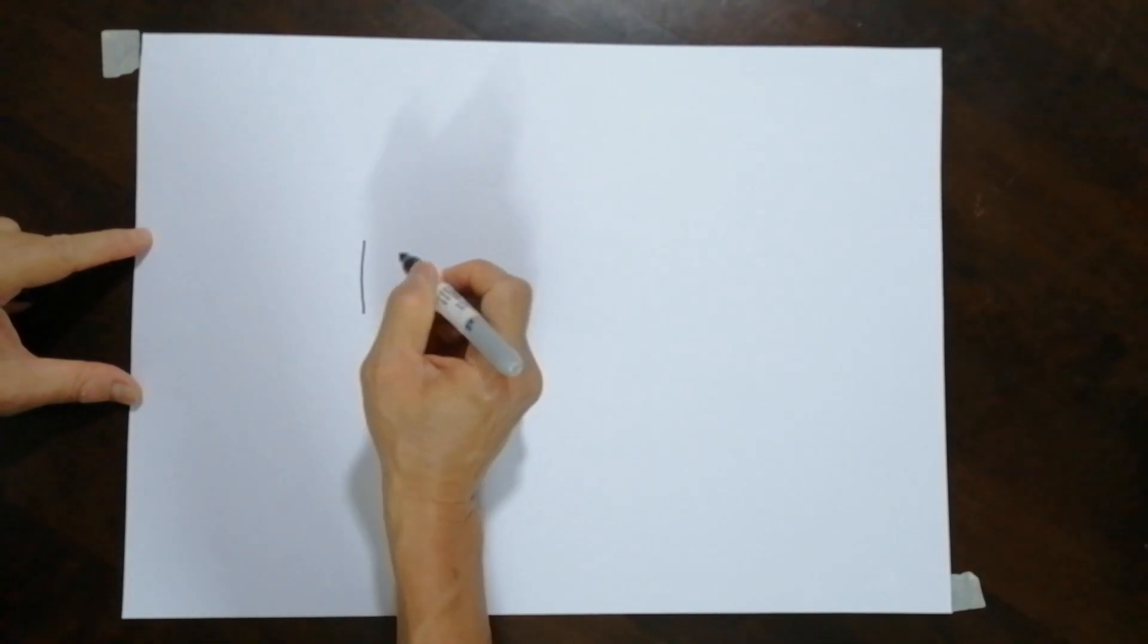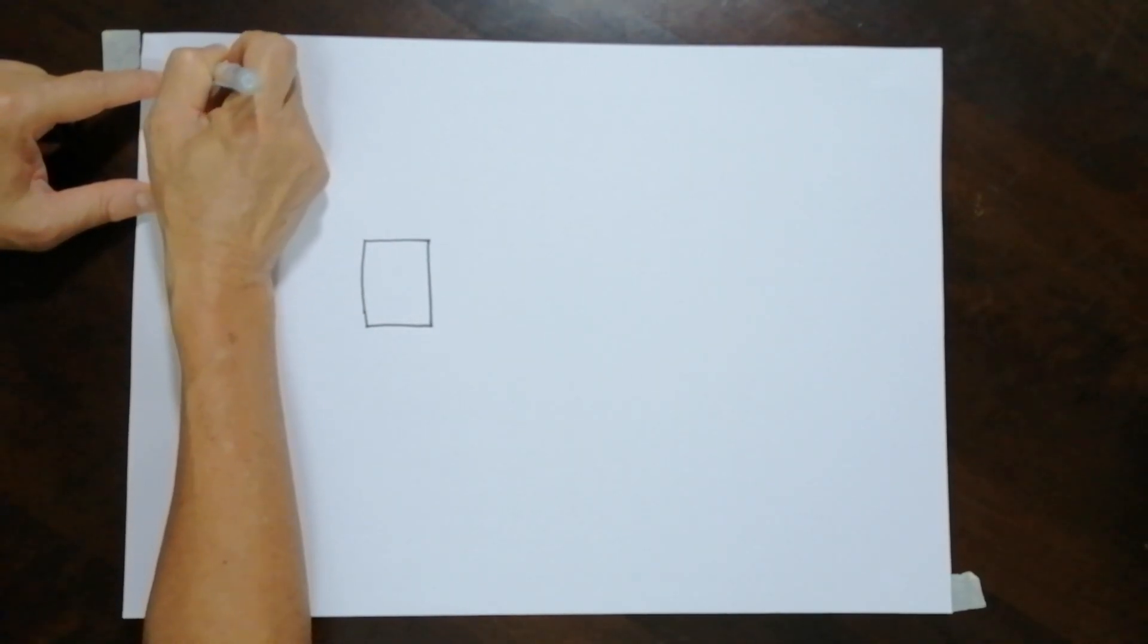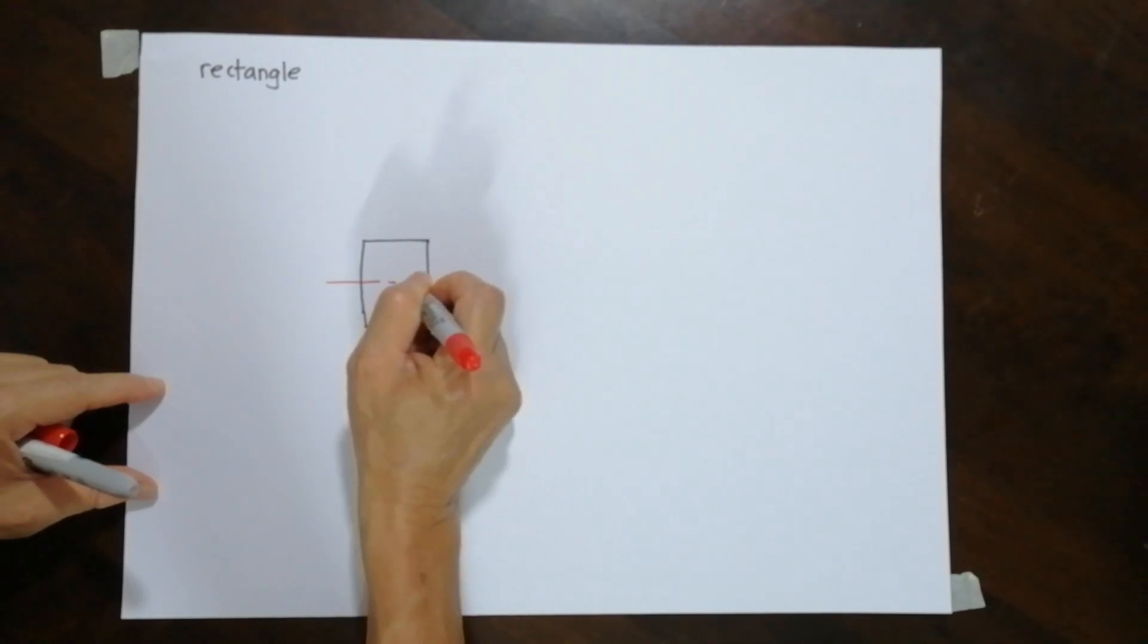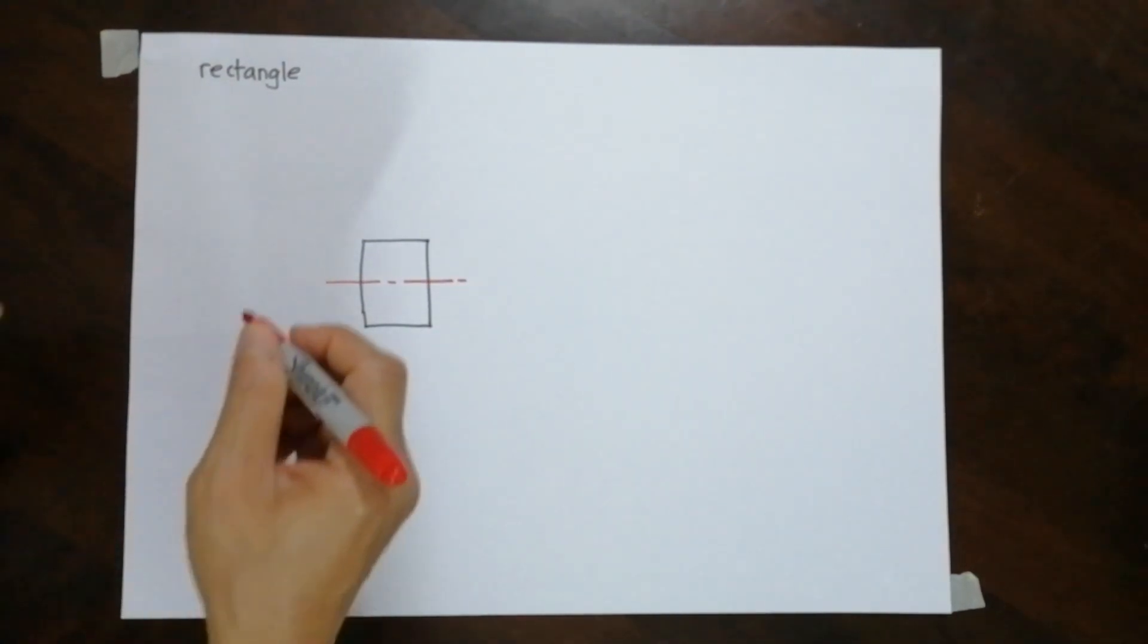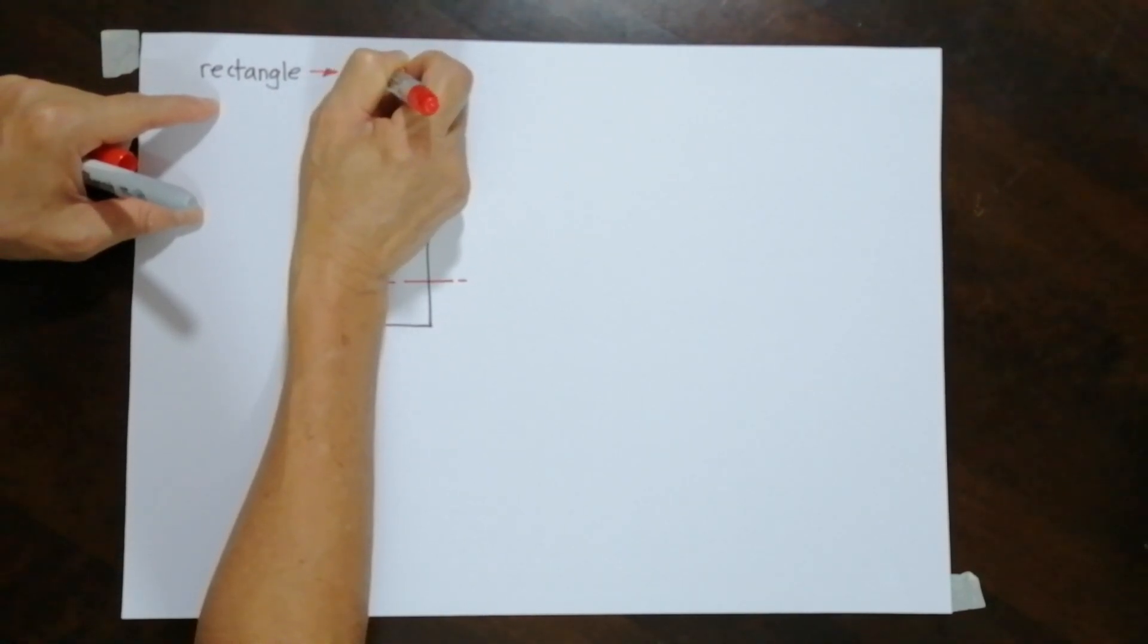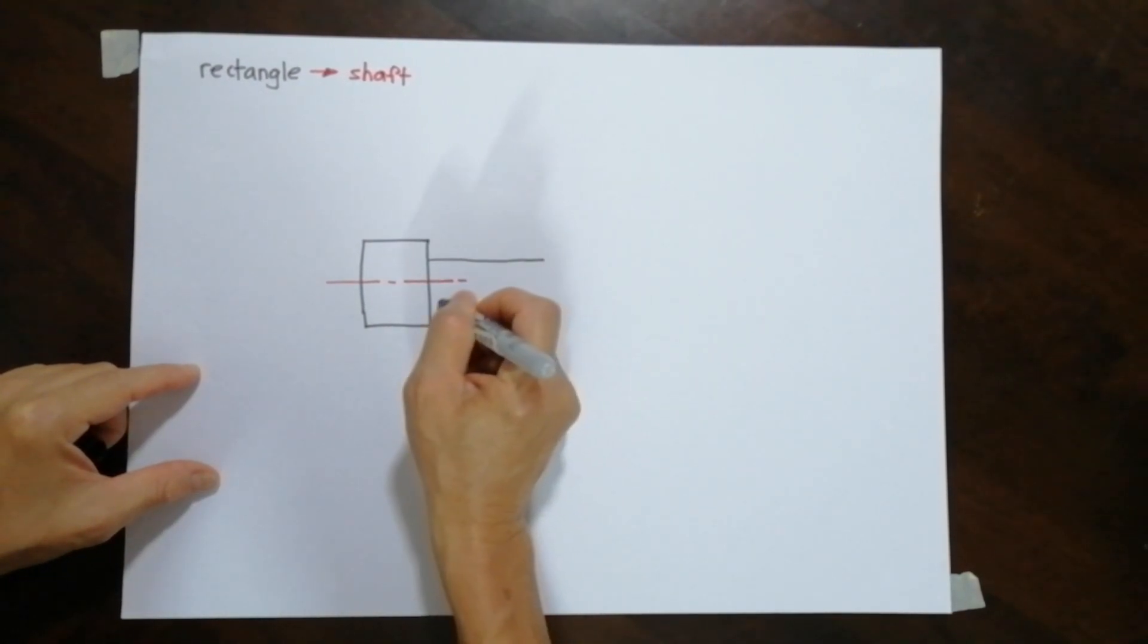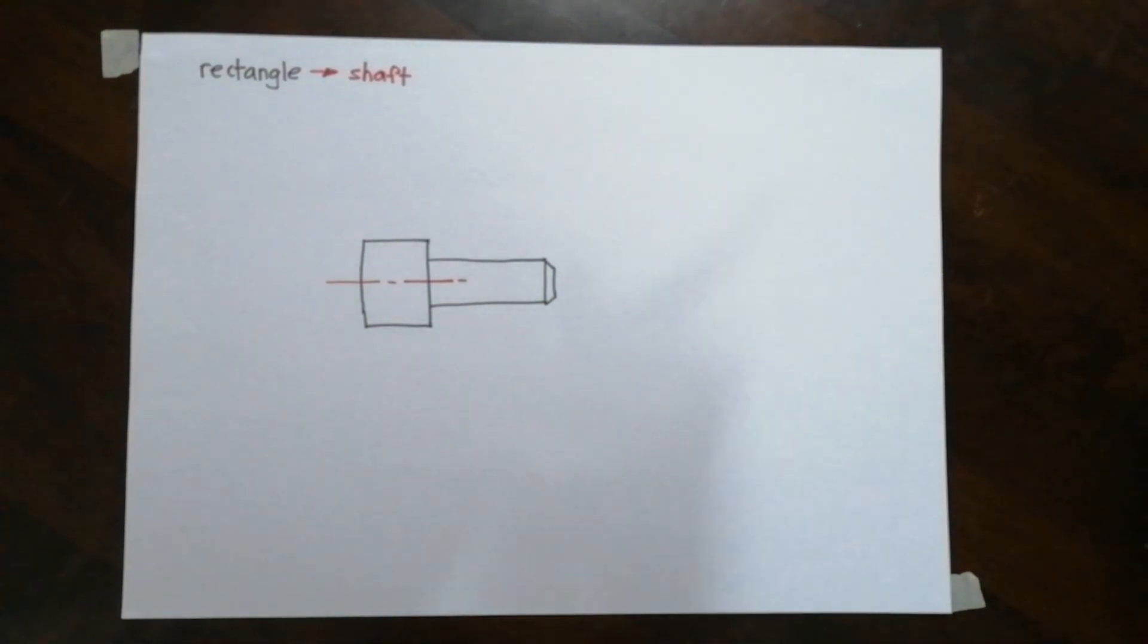To begin with, let me just draw a rectangle over here. So I have a rectangle. Now if I were to draw a center line over here, we should identify a long dash and a short dash. Then I will convert a rectangle into what we call a shaft.